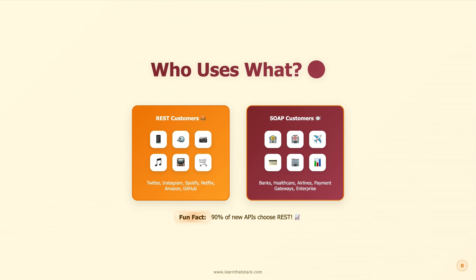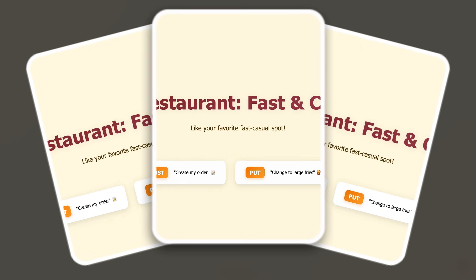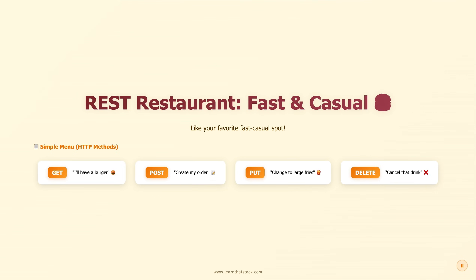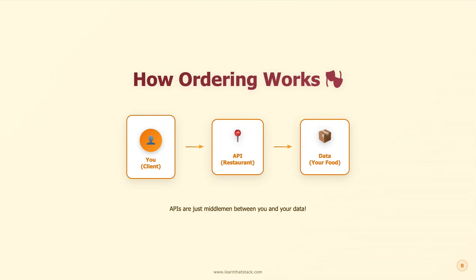Who's eating at REST? Twitter, Instagram, Spotify, Netflix, Amazon, GitHub. Look at that menu — it's just four basic options. You ask for something, they go to the kitchen, the server grabs what you need and brings it back to you.